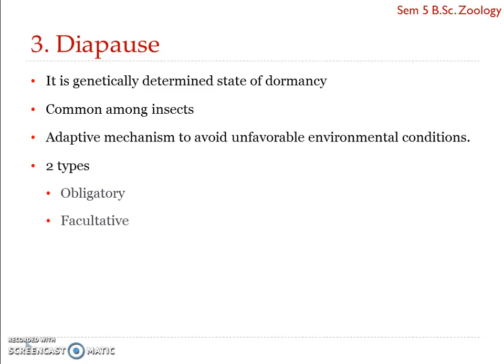Welcome to the next concept under ethology: diapause. Diapause is actually determined genetically and by endocrine functions, and it is a state of dormancy — a state where development, metabolic activity, etc. are suspended or arrested during embryonic, larval, pupal, or adult life of an animal.